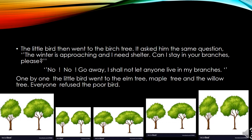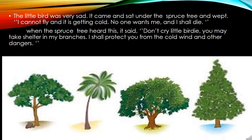The birch tree said: 'No, go away. I shall not let anyone live in my branches (main kisi ko bhi apni shahon mein rehne nahi dunga).' One by one, the little bird went to the elm tree, maple tree, and the willow tree. Everyone refused the poor bird (sabne gareeb parinde se inkaar kar diya). The little bird was very sad (chota parinda bahut afsurda tha).